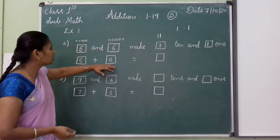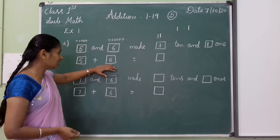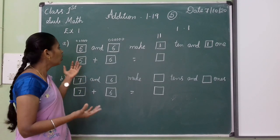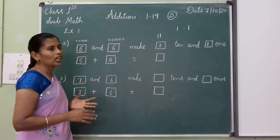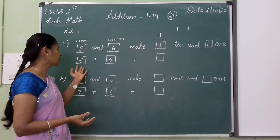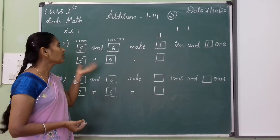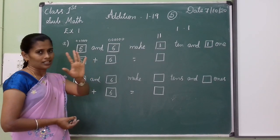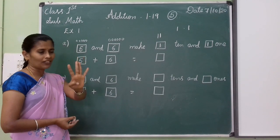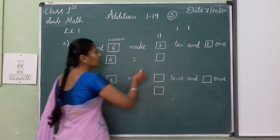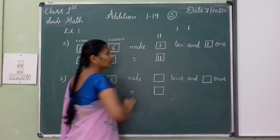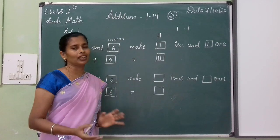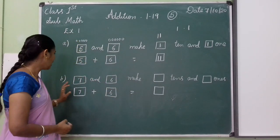Same children, 5 plus 6. Here we may add these 2 numbers and we get a double digit. Children, always keep the bigger number in your mind and the smaller number on your fingers. 6 in your mind and 5 on your fingers. After 6: 7, 8, 9, 10, 11. You got a double digit — one ten and one more.